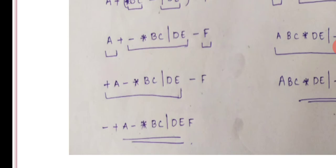The current minus is on the left-hand side. It becomes minus of minus star b c divide d e, and the right-hand side operand is f, giving minus of f on the right.